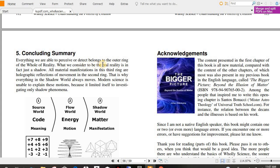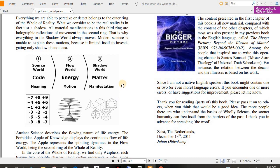Everything we are able to perceive or detect belongs to the outer ring of the whole of reality. What we consider to be real reality is, in fact, just a shadow. All material manifestations in this third ring are holographic reflections of movement in the second ring. That is why everything in the shadow world always moves. Modern science is unable to explain these motions because it limited itself to investigating only shadow phenomena. And it takes me to the, I believe it was Socrates' cave, where the people are watching the shadows on the wall and have no idea that the shadows are actually just not the real world. They're just shadows of what the real things really are. And that just really makes you think about, you know, if we're the shadow world, how amazing is the real world going to be when we shed our skin and make it back to our first estate? Can't wait.